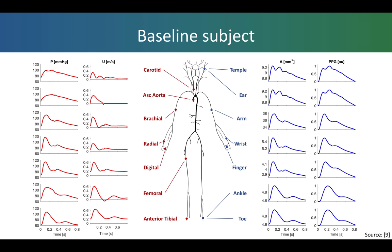The results. This shows the simulated pulse waves for a baseline 25 year old subject. From left to right are the pressure, flow velocity, luminal area, and PPG pulse waves.